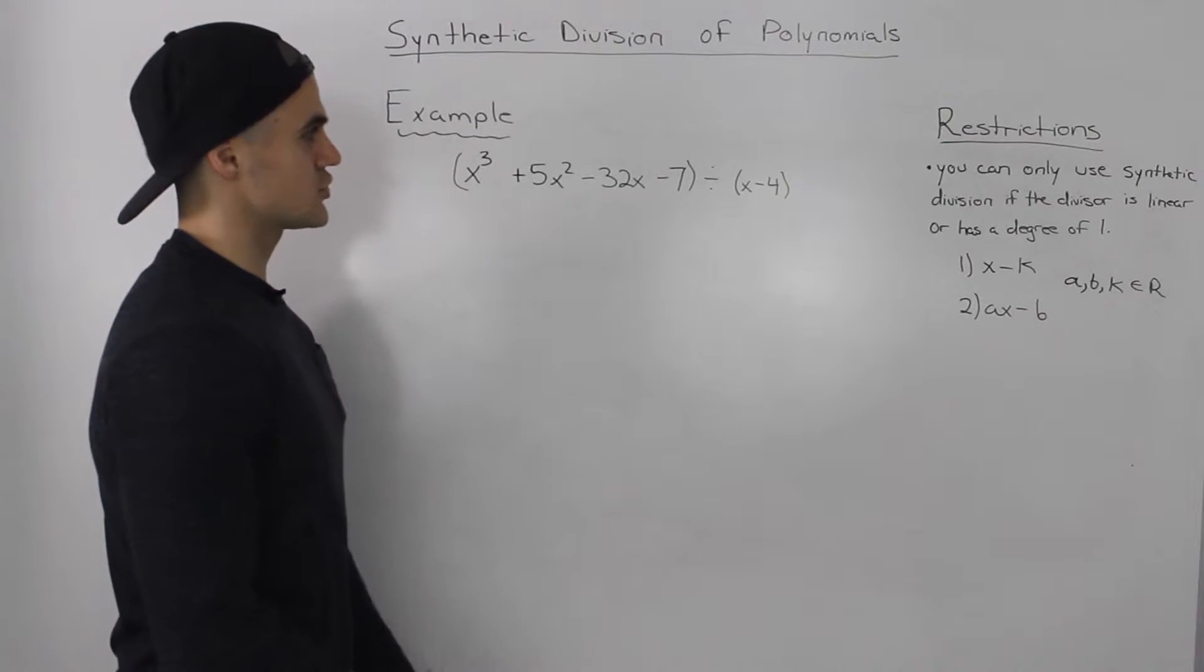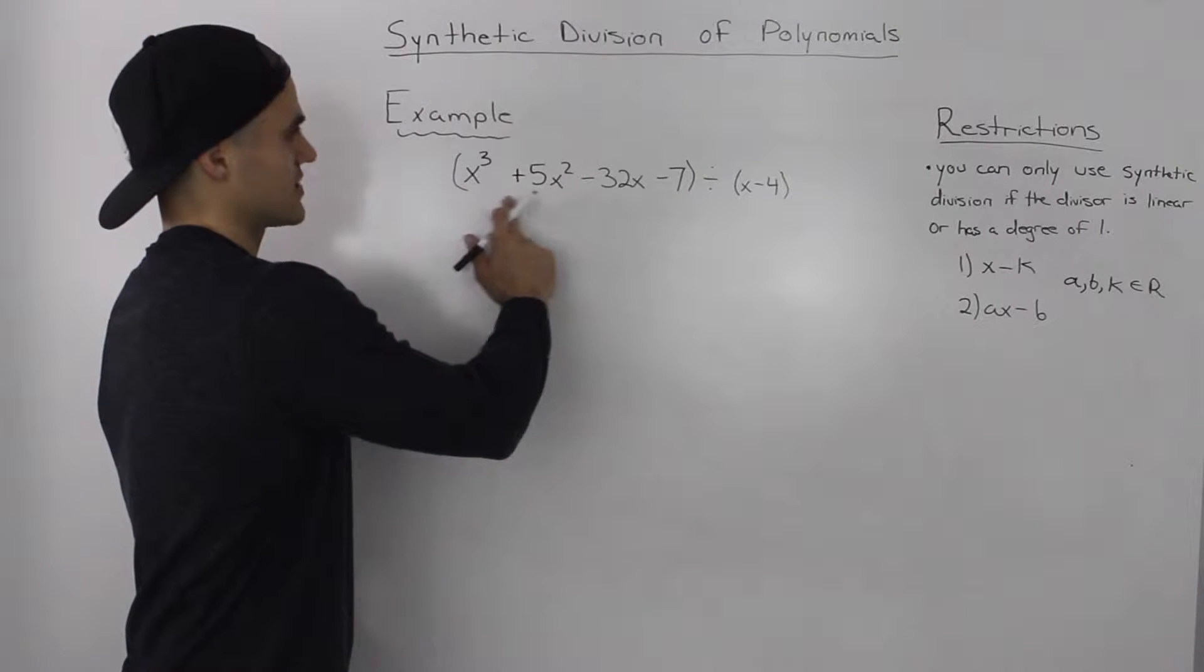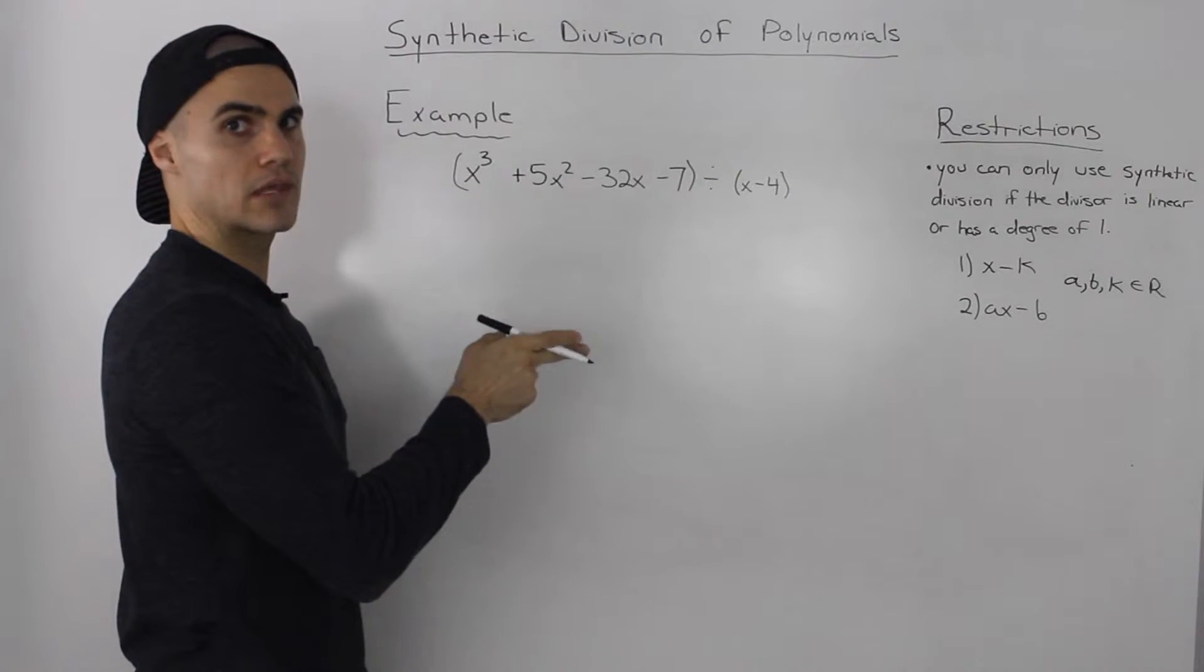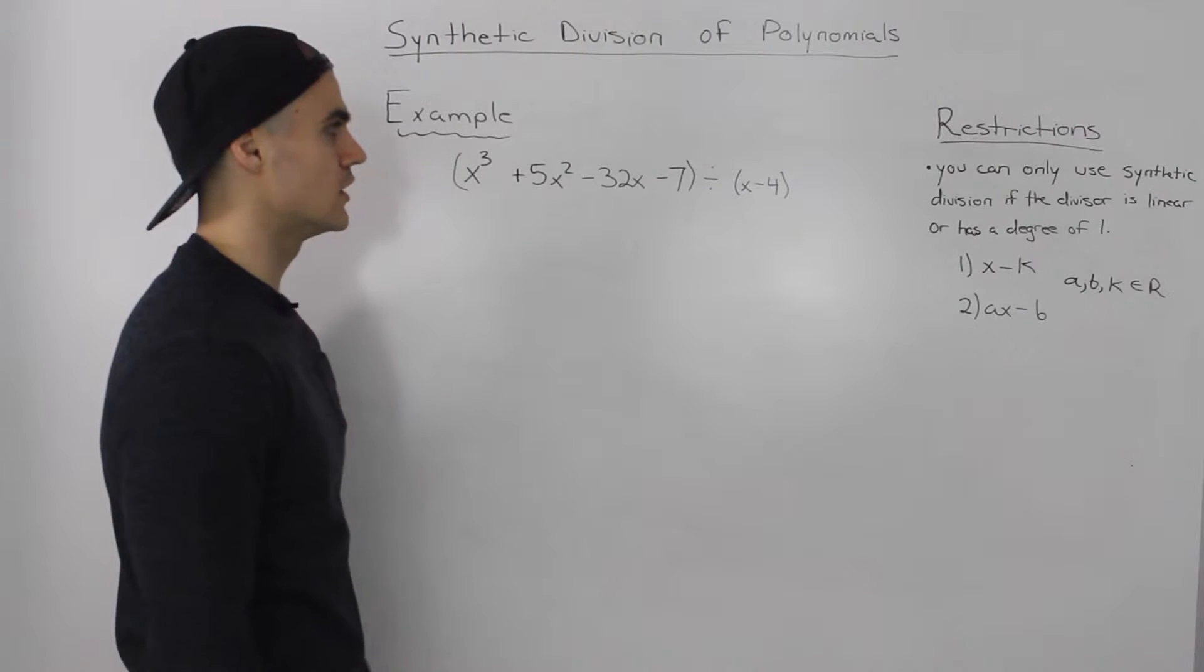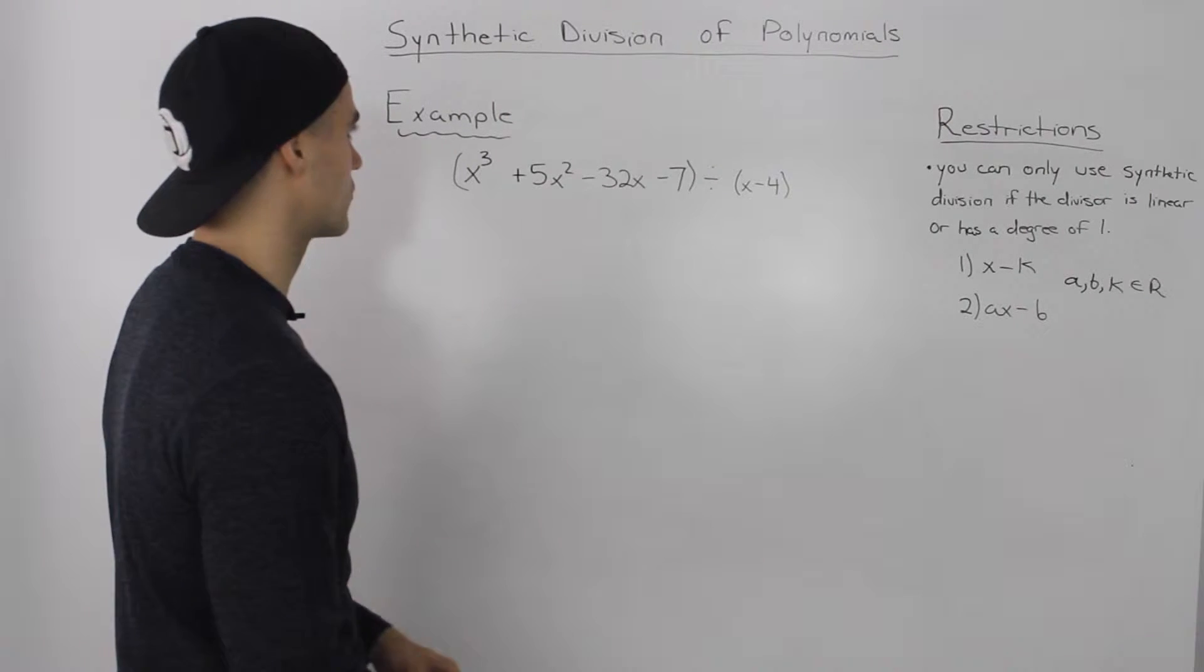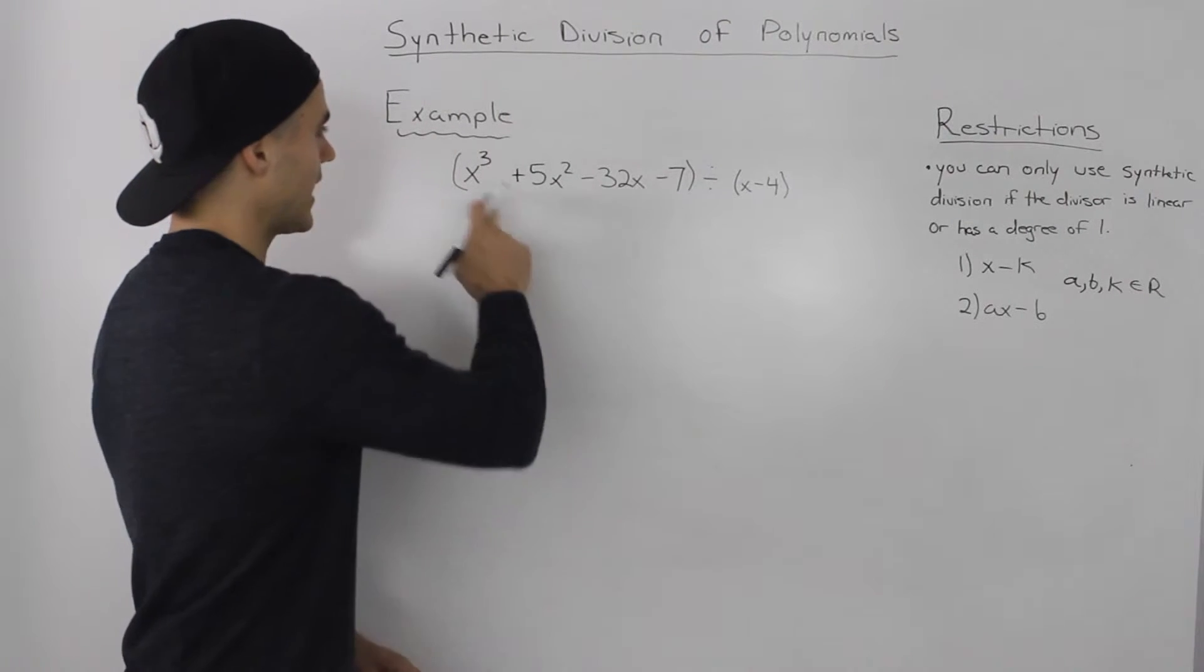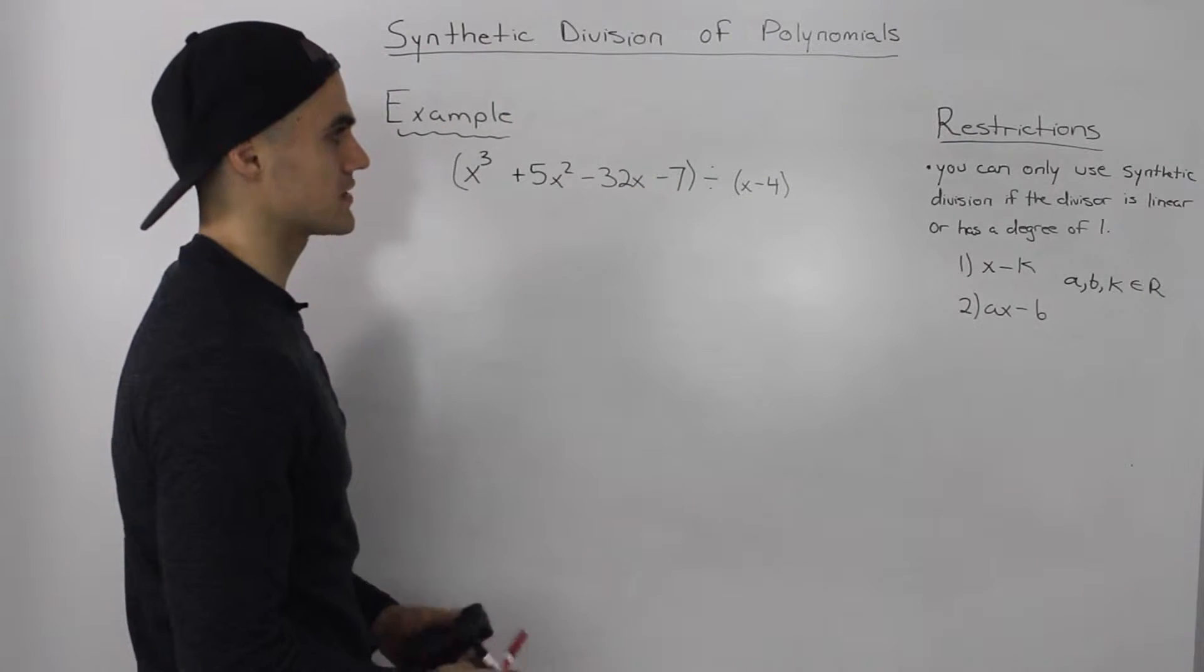So let's do an example here to show you how synthetic division works. This particular example is actually the same one that we used when we did the long division of polynomials overview, just so you can compare both methods and see how both methods give you the same result. We got X cubed plus 5X squared minus 32X minus 7 divided by X minus 4.